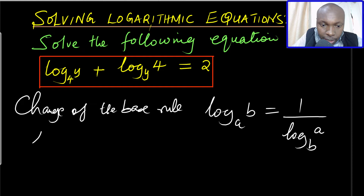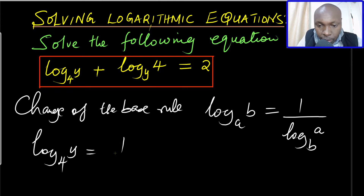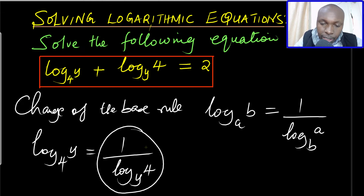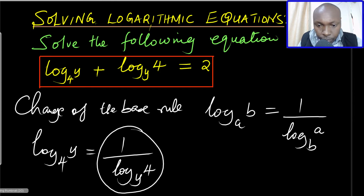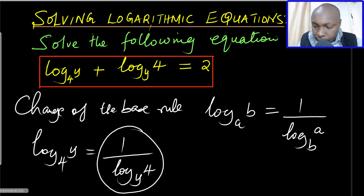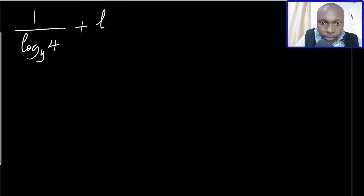So in this case, log of y to the base of 4 — if I want to change this base, I'll have it as 1 divided by log of 4 to the base of y. So now both terms are to the base of y. Instead of log of y to the base of 4, I will write it as 1 divided by log of 4 to the base of y, plus log of 4 to the base of y, equals 2.